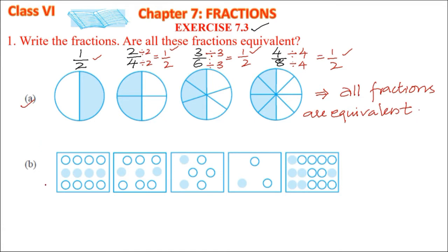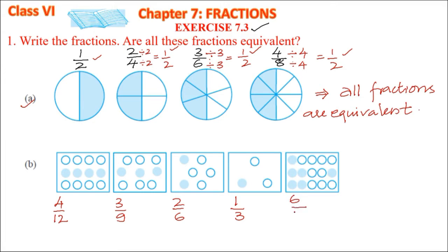Now the second part. Observe the number of circles: four are shaded out of twelve, three shaded out of nine, two shaded out of six, one shaded out of three, and six shaded out of fifteen.